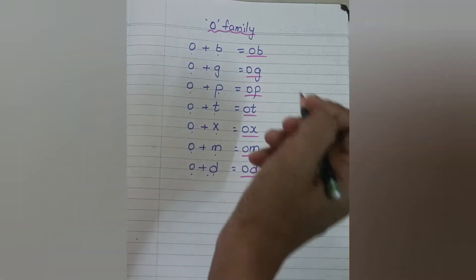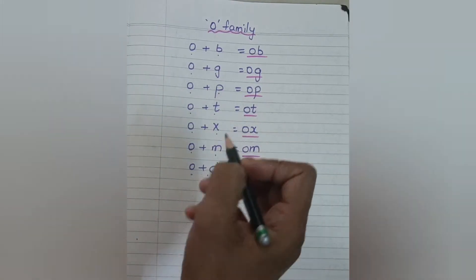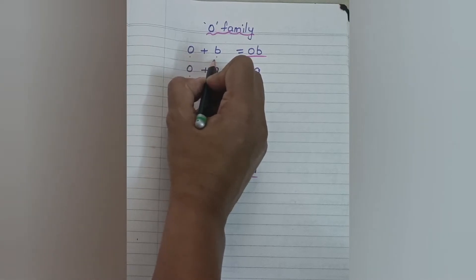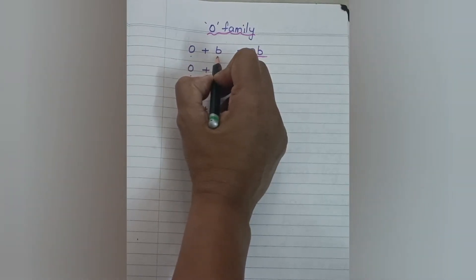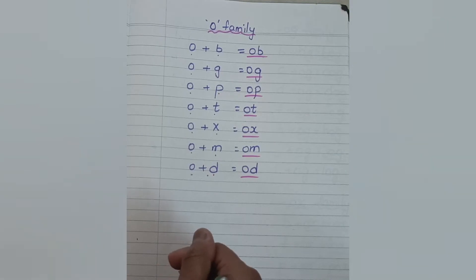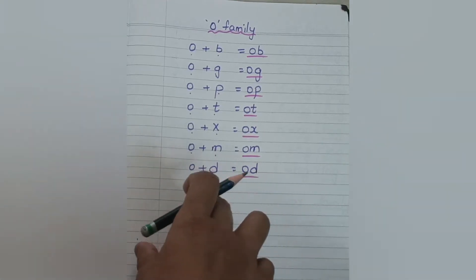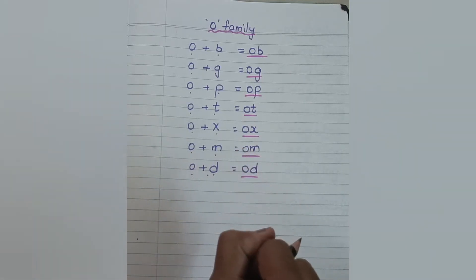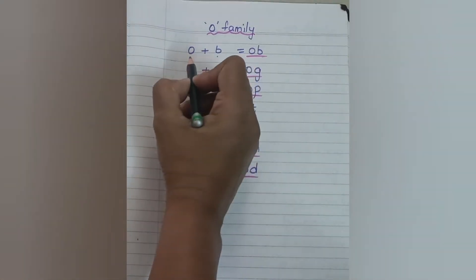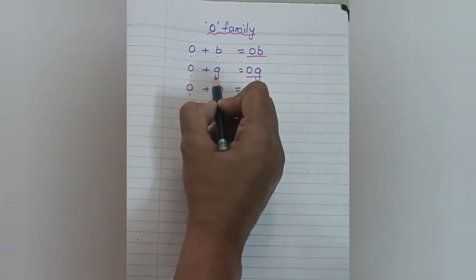Let's start today's video. Letter O sound is 'o'. First read with individual sounds, then blend them together. O sound is 'o', B sound is 'b'. In the previous videos I have suggested that before introducing all these blending or family words, make sure that your child must be familiar with all the 26 letter sounds.